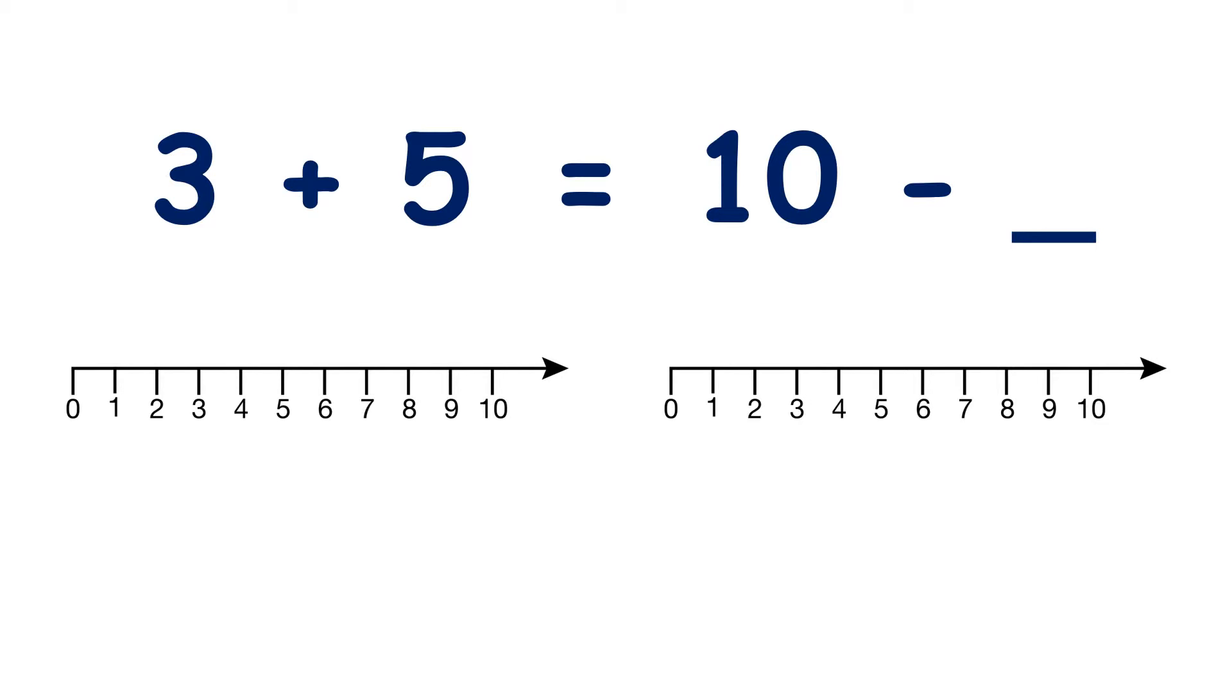Now this looks a little bit confusing, but just remember the equals sign just means is the same as, and you'll be able to work this out. So on the left over here, we have 3 plus 5. I'm going to add that on a number line, and remember when we're adding on a number line, it's easier to start with the largest number.